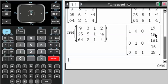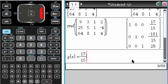This tells me that A is this value, B is this value, and C is that value. I'm going to go back and redefine my function. So G of X is 17 over 15 X squared minus 181 over 15 X, and then plus 28.